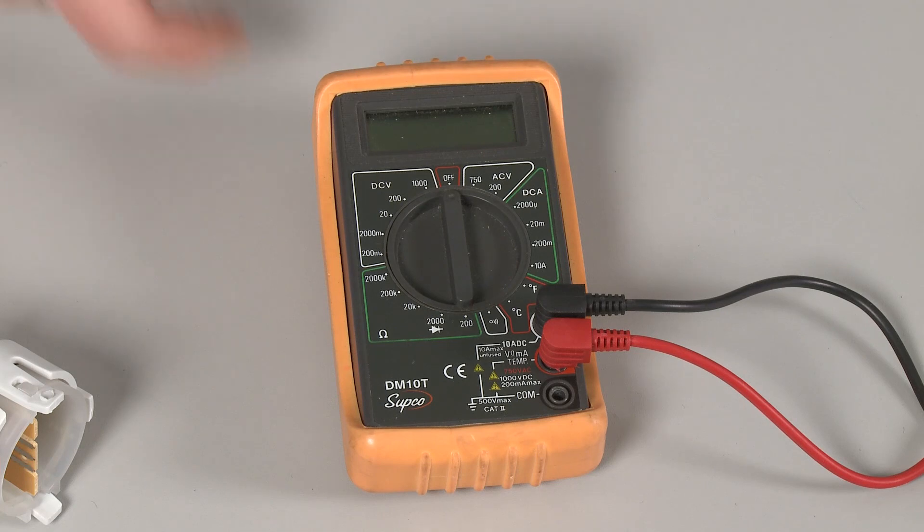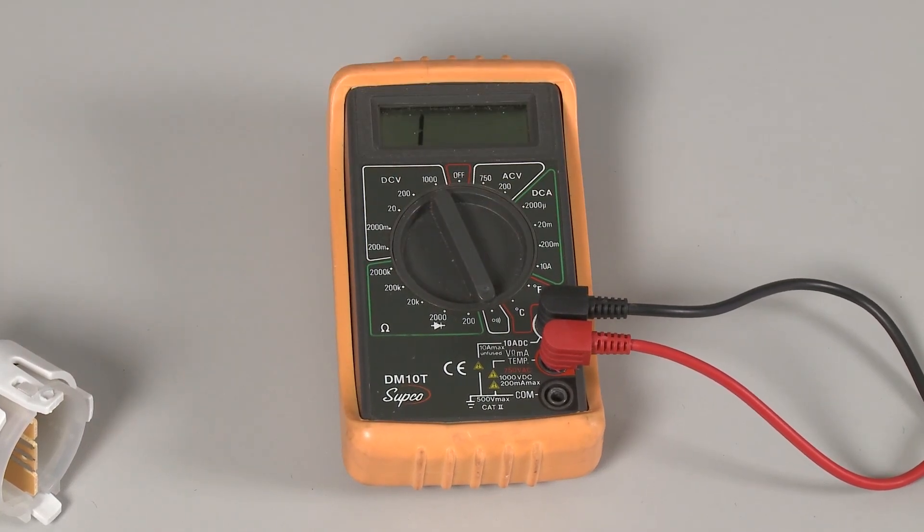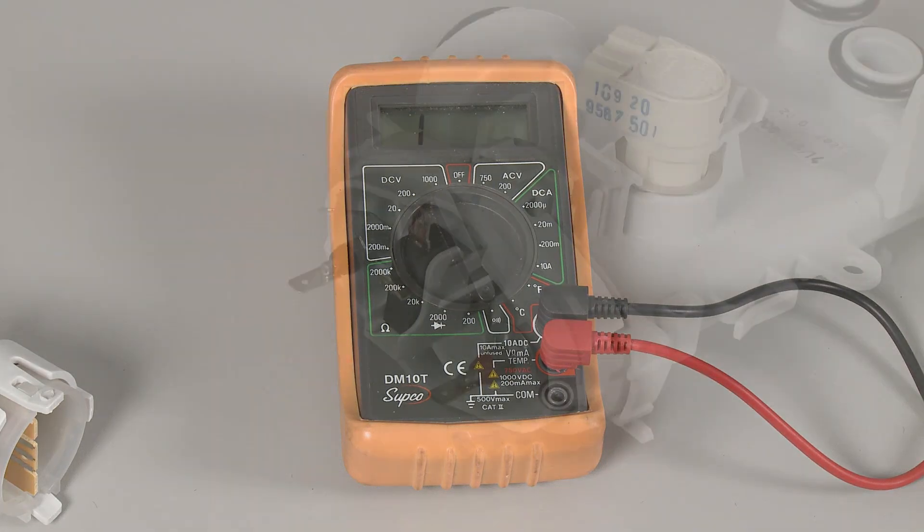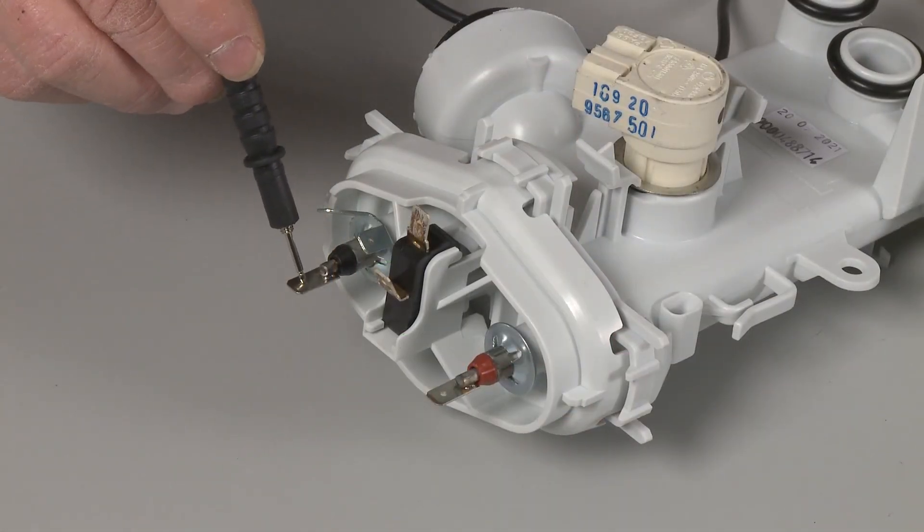Set the multimeter's range selection dial to the lowest setting for ohms of resistance. Now contact the black meter lead to the heater's input terminal and the red lead to the output terminal.